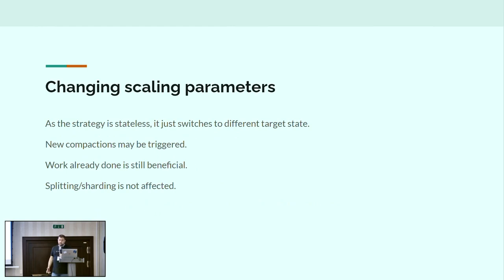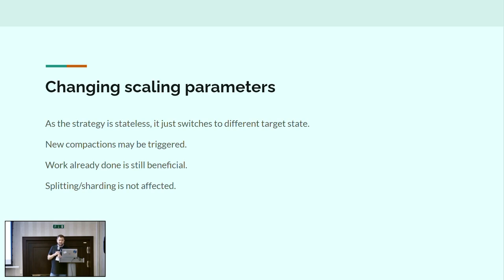Something else that's important: if you want to change the compaction you do — for example, your read latencies are higher than you want and you want to do more read optimization — you can change the parameters. It's not going to trigger a lot of compactions, just a little bit, and you can very easily do this. This is very different from previous compaction strategies where most of the time if you do a change, all of your data needs to be recompacted again. This also makes it possible to imagine an automatic mechanism for adjusting compaction so that it's more efficient for a given use case — something we've been developing as well, though it's not yet ready.